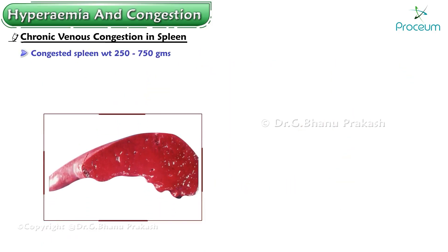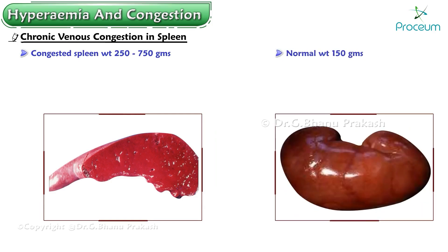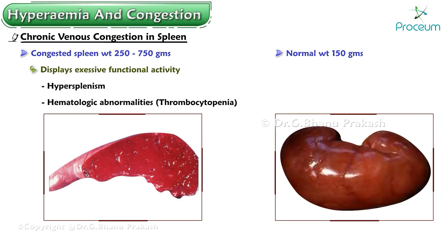A congested spleen may weigh 250 to 750 grams, compared with a normal weight of 150 grams. The enlarged spleen sometimes displays excessive functional activity causing hypersplenism, which leads to hematologic abnormalities such as thrombocytopenia. That's all for the video.